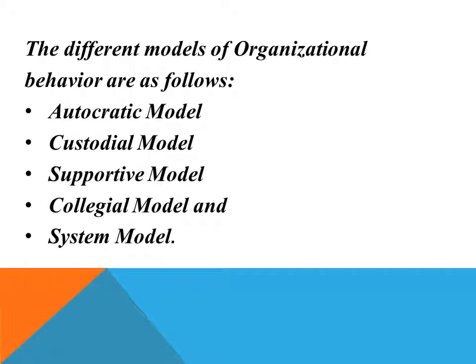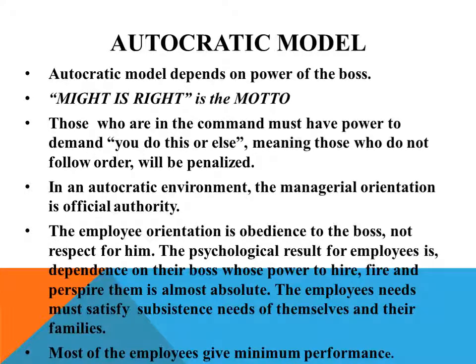Basically there are four models of organization behavior, but here we will be studying five models of organization. The first model is the autocratic model. This model depends on the power of the boss. The motto is 'might is right' — those who are in command must have the power to demand. Those who do not follow the orders will be penalized.